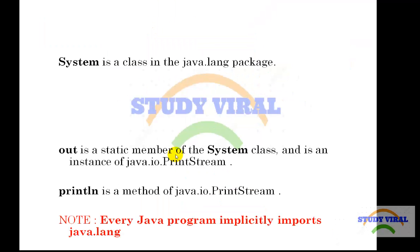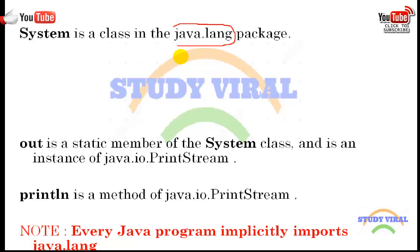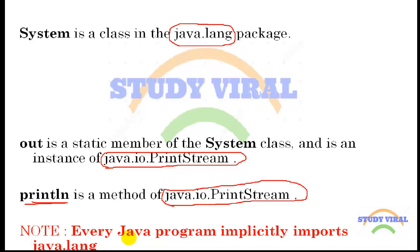System is a class which exists in the java.lang package and always exists in this package. 'out' is a static member of the System class and is an instance of java.io.PrintStream — this is sometimes important in case of an interview. 'println' is a method which also exists in java.io.PrintStream. An important note: every Java program implicitly imports the java.lang package, so if you do not import this package, by default java.lang is present in every Java class.